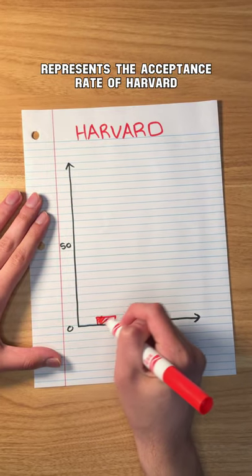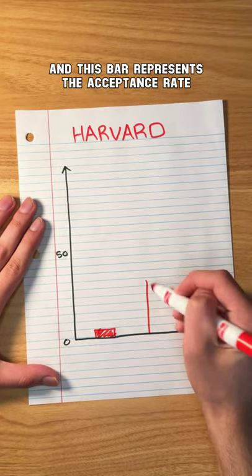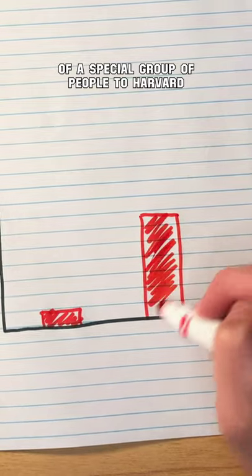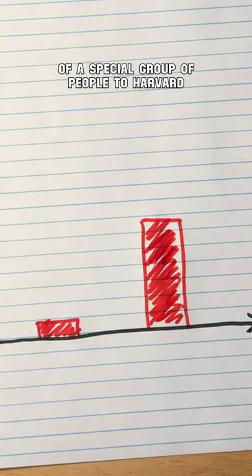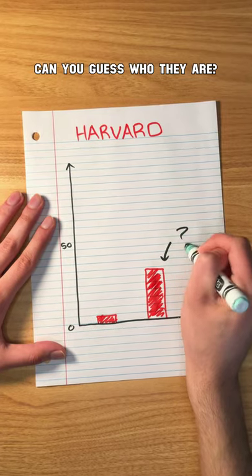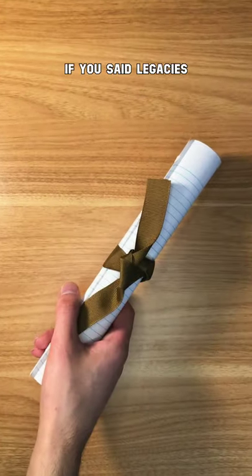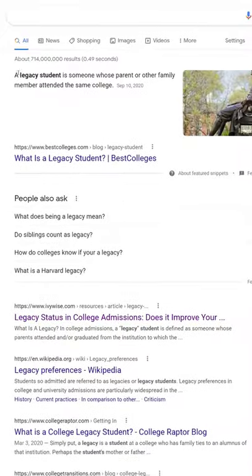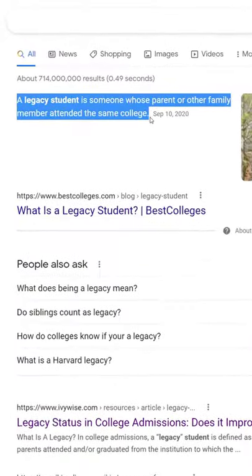This bar represents the acceptance rate of Harvard, and this bar represents the acceptance rate of a special group of people to Harvard. Can you guess who they are? If you said legacies, you would be correct. A legacy student is someone whose parent or relative attended the same college.